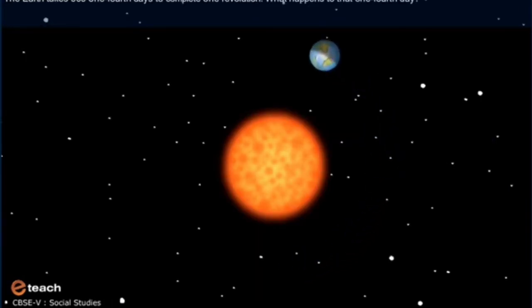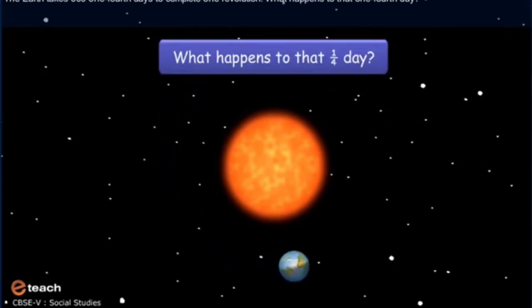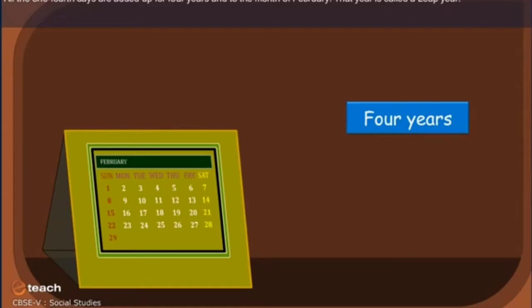The earth takes 365 and one-fourth days to complete one revolution. What happens to that one-fourth day? All the one-fourth days are added up for four years to the month of February. That year is called a leap year. So, in a leap year, February has 29 days.